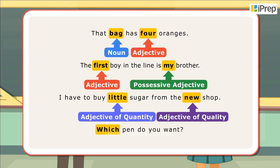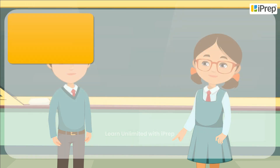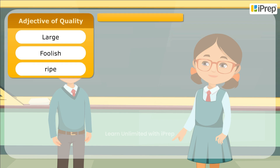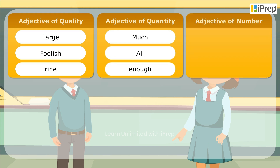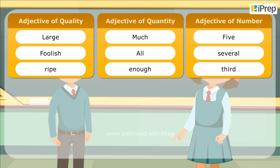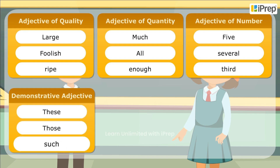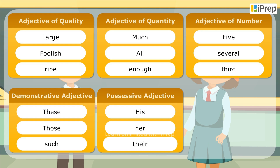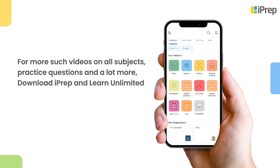In the last sentence, 'which' asks a question about the noun 'pen' and is an interrogative adjective. Here is a list of some different kinds of adjectives: Adjective of quality — large, foolish, ripe. Adjective of quantity — much, all, enough. Adjective of number — five, several, third. Demonstrative adjective — these, those, such. Possessive adjective — his, her, their. Interrogative adjective — what, which, whose.